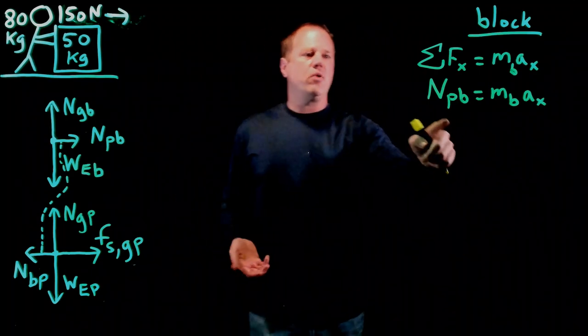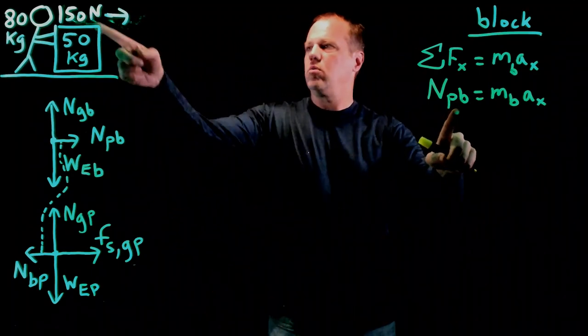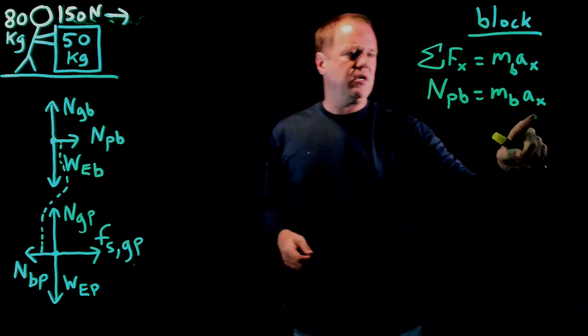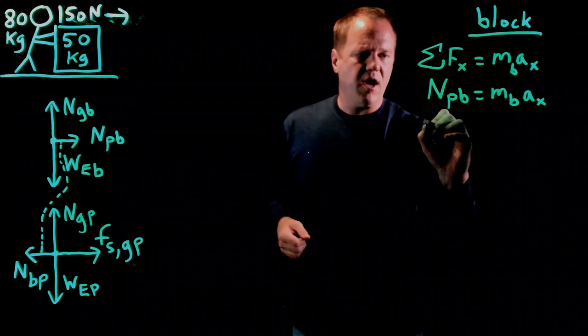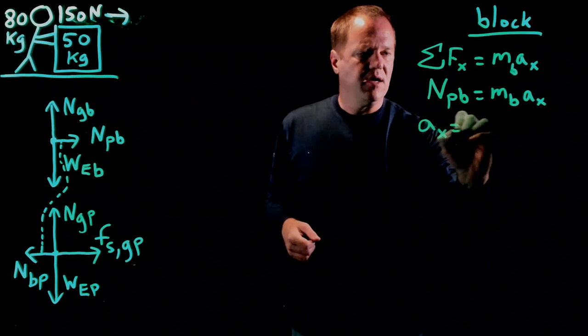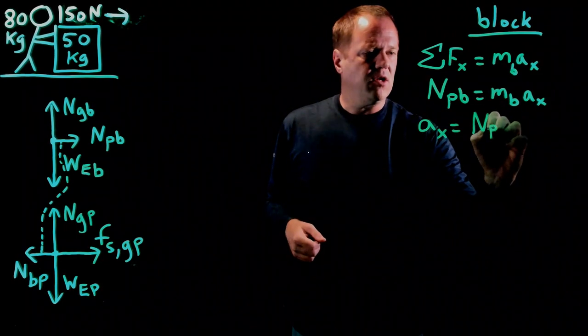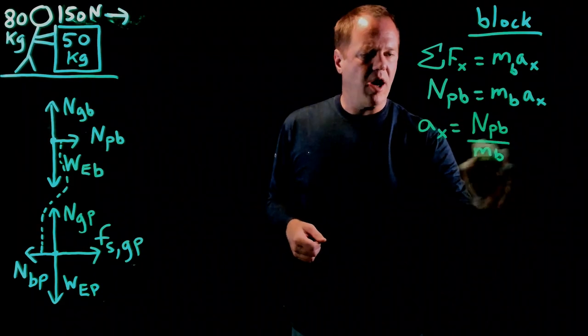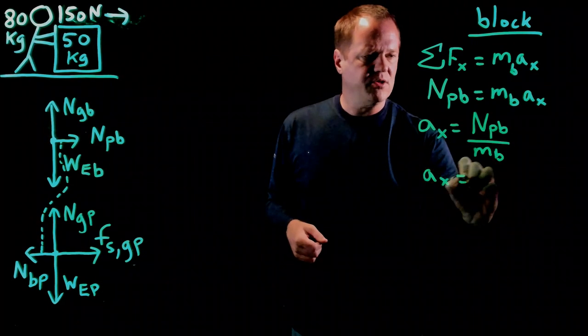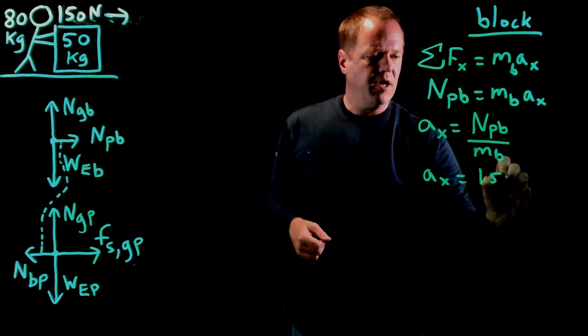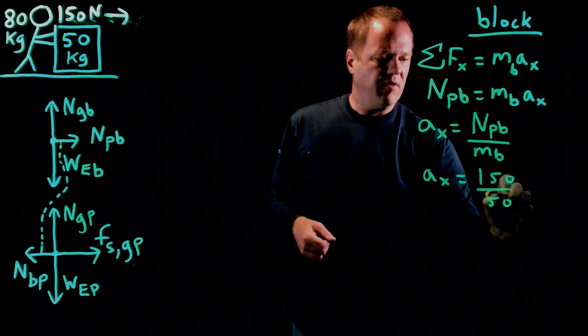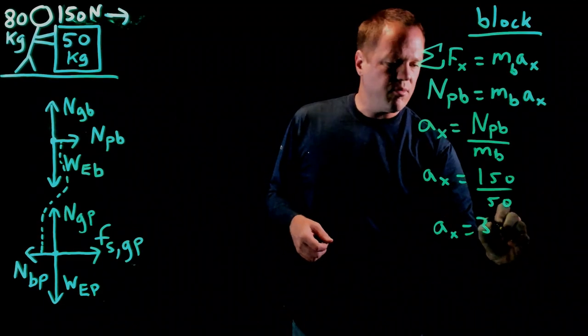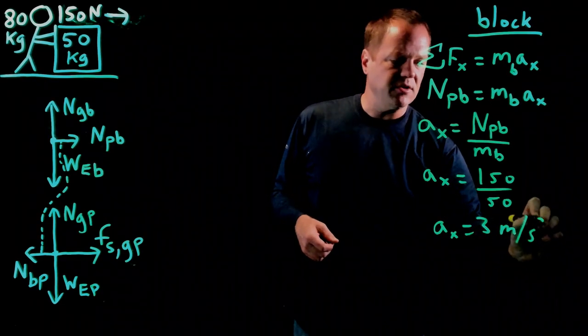Okay, this is one equation with one unknown. We know the normal force from the person is 150 newtons. I gave you the mass of the block is 50 kilograms, so you can maybe even do this one in your head. Calculate the acceleration by taking the normal force and dividing by the mass of the block. Okay, so normal force from the person, 150 newtons divided by 50, and then I get an answer of 3 meters per second squared.